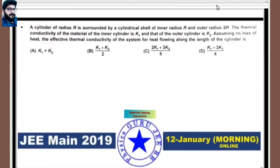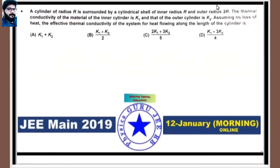Our first question is from JEE Main 2019, 12th January morning online, which is based on effective thermal conductivity. A cylinder of radius R is surrounded by a cylindrical shell with inner radius R and outer radius 2R.